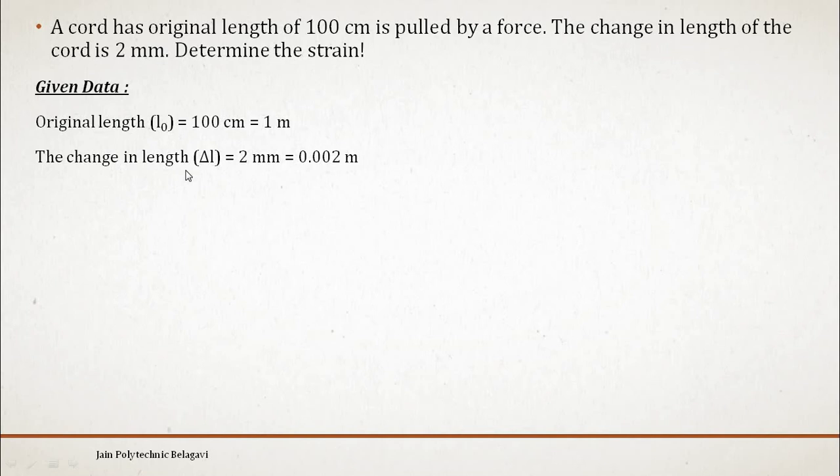This can also be written as 1000 millimeter. The change in length, that is ΔL, is 2 mm extension because it is pulled. The cord was pulled and that is why the change in length is extension, so extension in length is 0.002 meter or 2 millimeters.